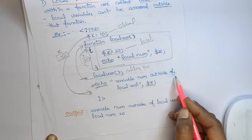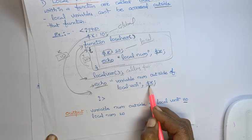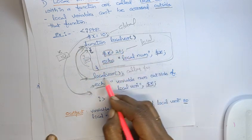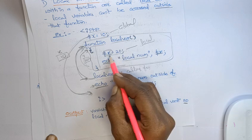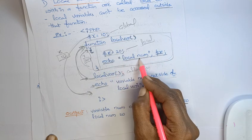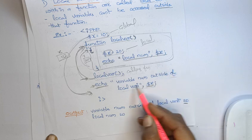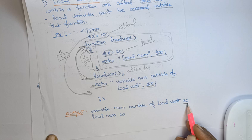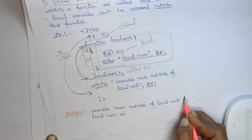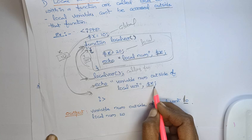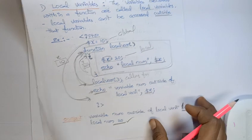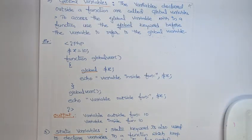Looking at the output: first, the function is called, and within it the local variable value prints as 20. Then, outside of the function, the x variable prints as 10 — that is the global x. So you will get 20 from inside and 10 from outside. Next, we will see global variables in the next video.